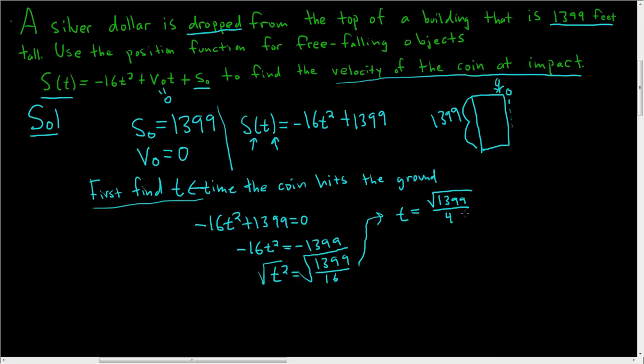So after that many seconds, whatever number that is, the coin will hit the ground. To finish, we just need the velocity function. So the velocity is the derivative of the position function. And this derivative is really easy. Here you take the 2 and you bring it down. So you get negative 32t, and the derivative of 1399 is 0. So our velocity function is negative 32t.